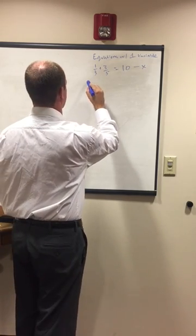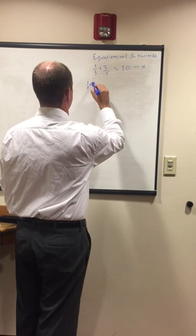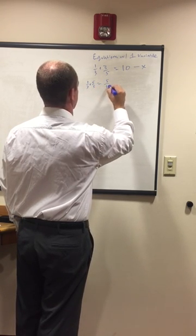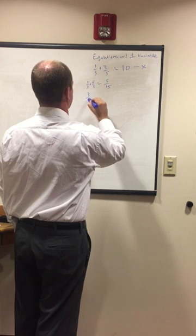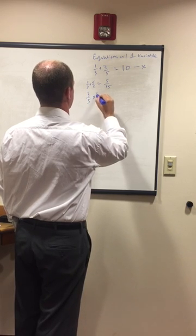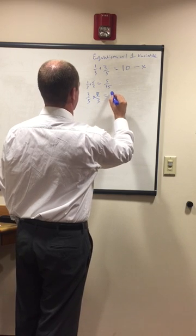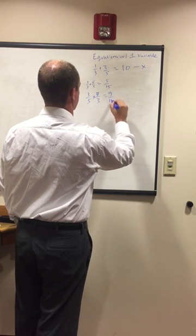To get that, we go one-third times 5 over 5 equals 5 over 15, and three-fifths times 3 over 3 equals 9 over 15.